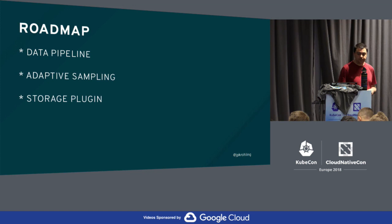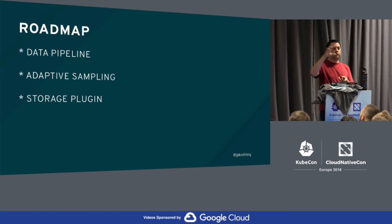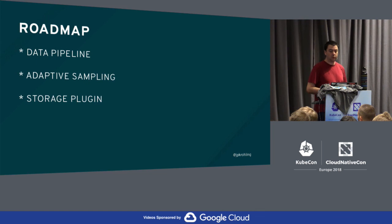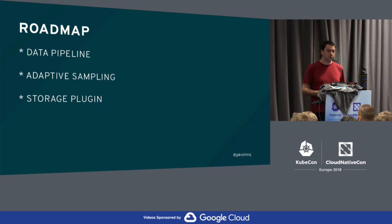The second roadmap item is adaptive sampling, which I mentioned before. Adaptive sampling means on-the-fly changing of sampling rates based on current requirements. Right now we can kind of achieve adaptive sampling by playing with Kubernetes pods — having one service backed by two sets of deployments with different sampling rates using blue-green or A/B approaches — but we can't do actual smarter decisions. Adaptive sampling aims to provide more intelligent decisions about whether to sample a request.